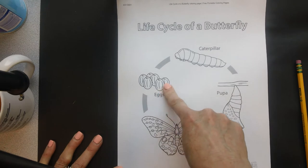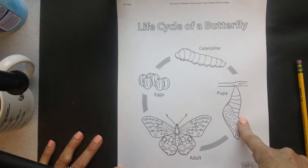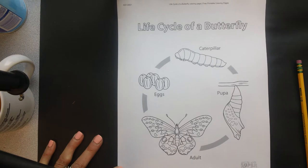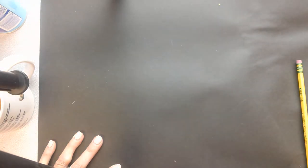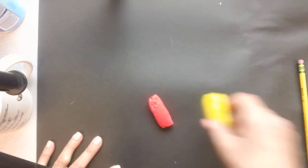starting with an egg, caterpillar, chrysalis, and then the butterfly. I'm going to set this outside of the camera so you can see what we're going to be doing with the Model Magic clay.